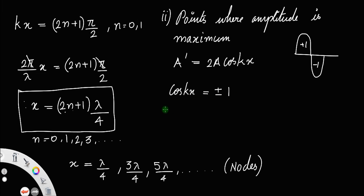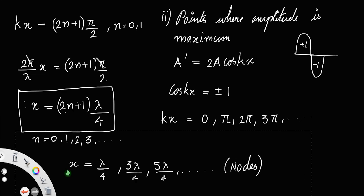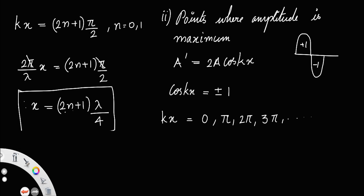The values of kx that give cos(kx) = ±1 are: kx = 0 (cos 0 = 1), kx = π (cos π = −1), kx = 2π (cos 2π = 1), and so on. Generalizing: kx = nπ, where n = 0, 1, 2, 3, ... When n = 0, kx = 0; when n = 1, kx = π.